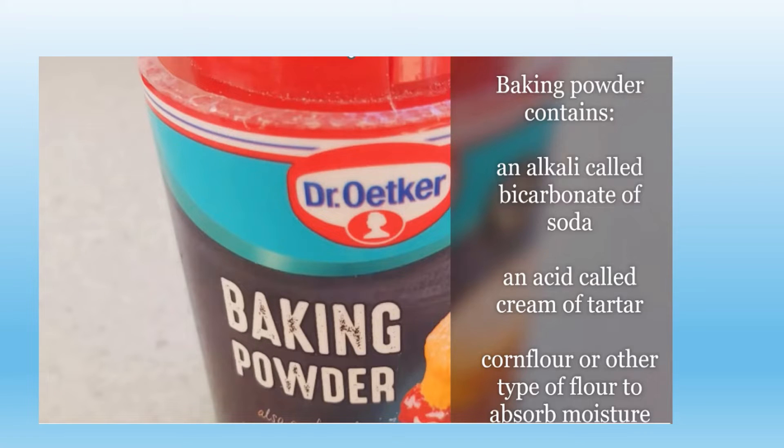Baking powder contains an alkali called bicarbonate of soda. It also contains an acid called cream of tartar, as well as corn flour or another type of flour to help absorb moisture.